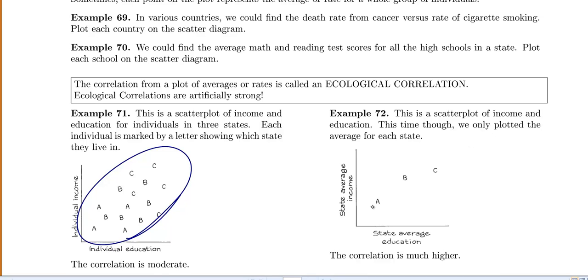But for 72, they only plotted the average for each state. So all the A's went in together to give you this one little A, and then all the B's give you this B and your C. If I was to draw that line, hey, it looks like those points are pretty close to the line and it looks like I have a really high correlation.